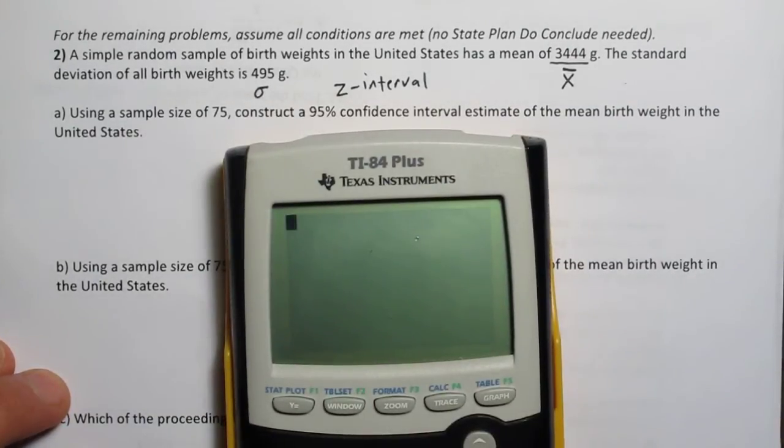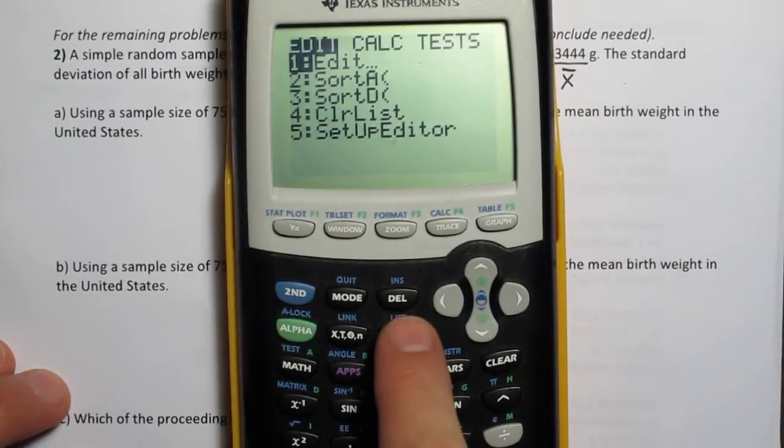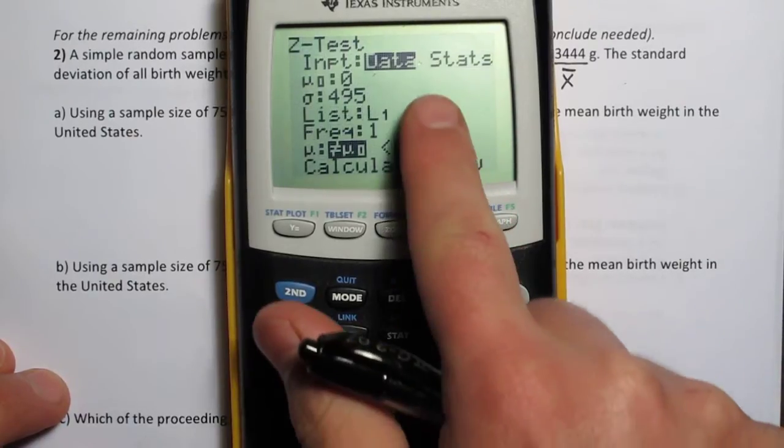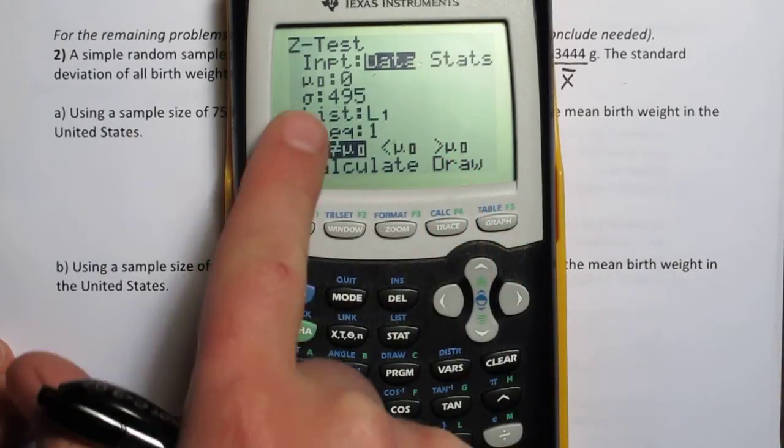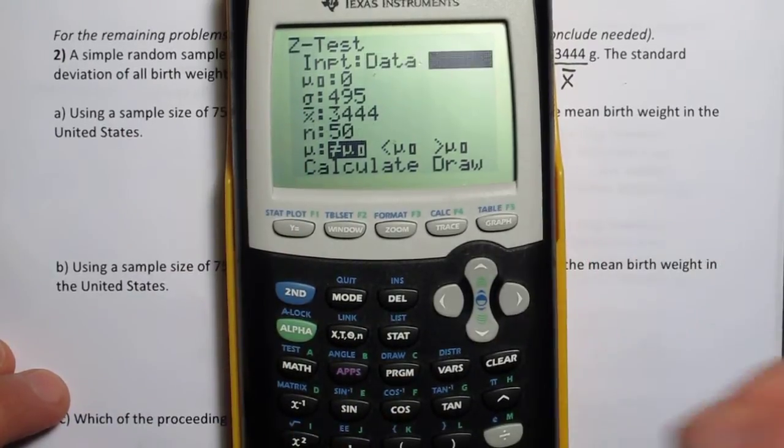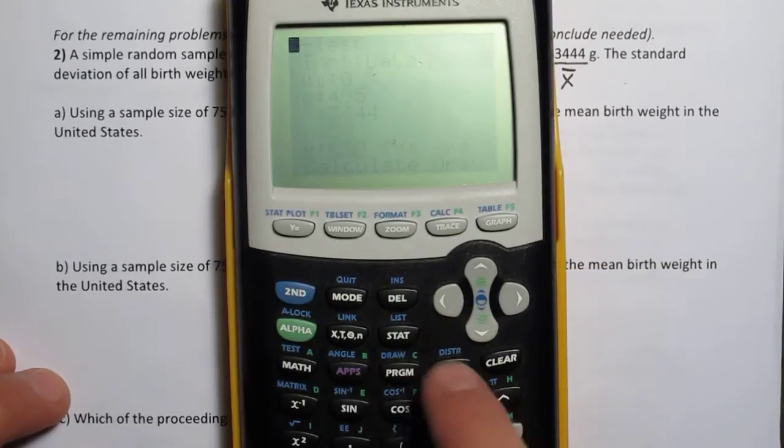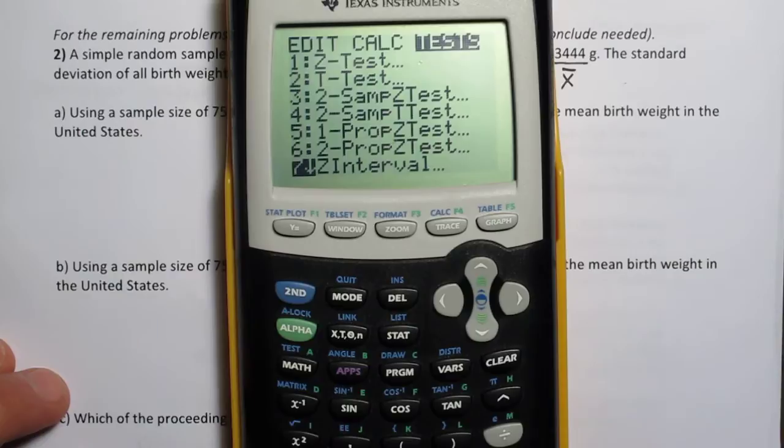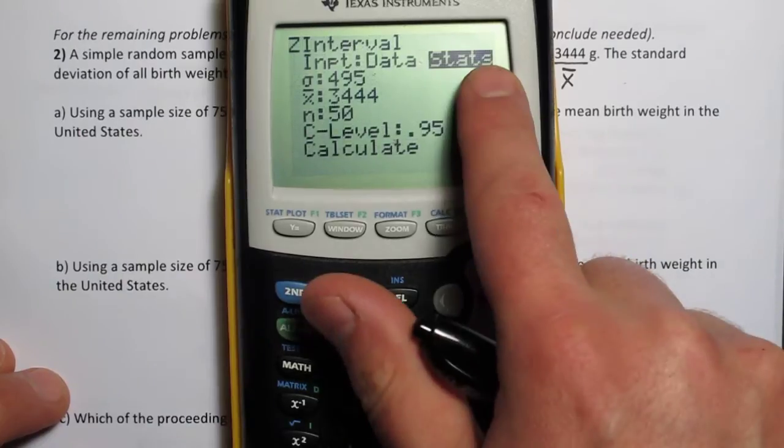So to do this you push the stat button on your calculator. Push stat, scroll over to test, and it might be in this menu right now where it says data. We're not going to use that. We're going to go right to the stats menu. I'm sorry I pushed the wrong function here. So go to z interval, that's the right one, not z test.